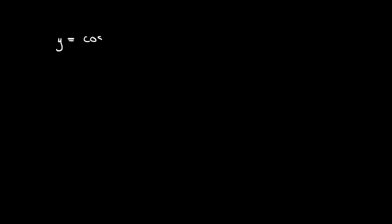Let's say we have y is equal to cosine of 3x plus 2. If we were to differentiate this, then we differentiate the function on the outside, the cosine, and that's going to give us minus sine of 3x plus 2. And then we differentiate the function on the inside, the 3x plus 2, and that gives us 3. So we multiply through by 3, and our answer is minus 3 sine of 3x plus 2.